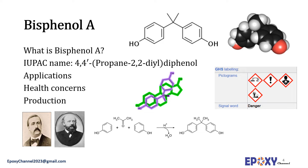The synthesis of bisphenol A was first reported in 1891 by the Russian chemist Alexander Dianin. It was not until 1905 that pure bisphenol A was synthesized from acetone and phenol.